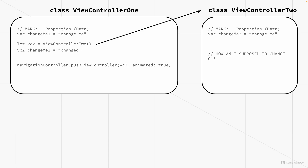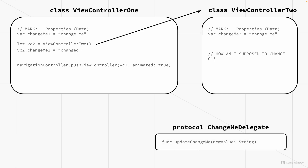How are we supposed to do that with delegation? The first step in delegation is to define the menu — the protocol. The protocol basically says, hey view controller one, this is what you can accept: a function called updateChangeMe. The protocol is like an interface in Java — it defines the functions but doesn't implement them. It says this function should exist, but we're not implementing it yet.